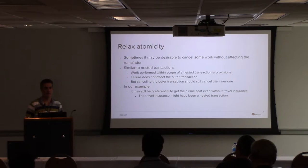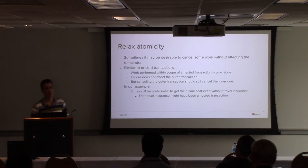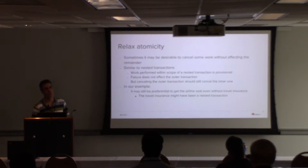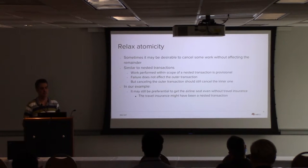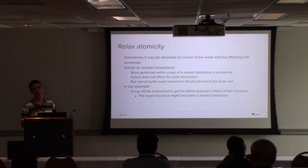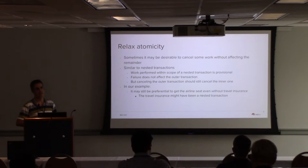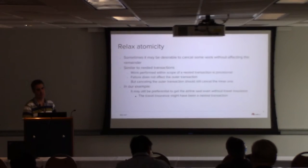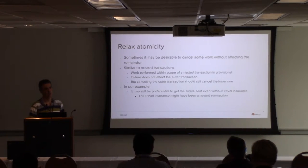A more conventional approach to handling a break of atomicity is with nested transactions. You don't get nested transactions with JTA, but you do with other models like the Object Transaction Service from CORBA, for example. That's where you can do some work inside a nested transaction, and if you decide you don't want to do that nested work, you can cancel it without affecting the top-level transaction, which will continue running. So if you book your flight in the top-level transaction, that's still there, and you just cancel the insurance work.